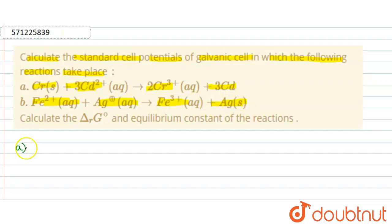Now, let us take Cr solid plus 3 Cd2+ aqueous. It gives rise to 2 Cr3+ aqueous plus 3 Cd.